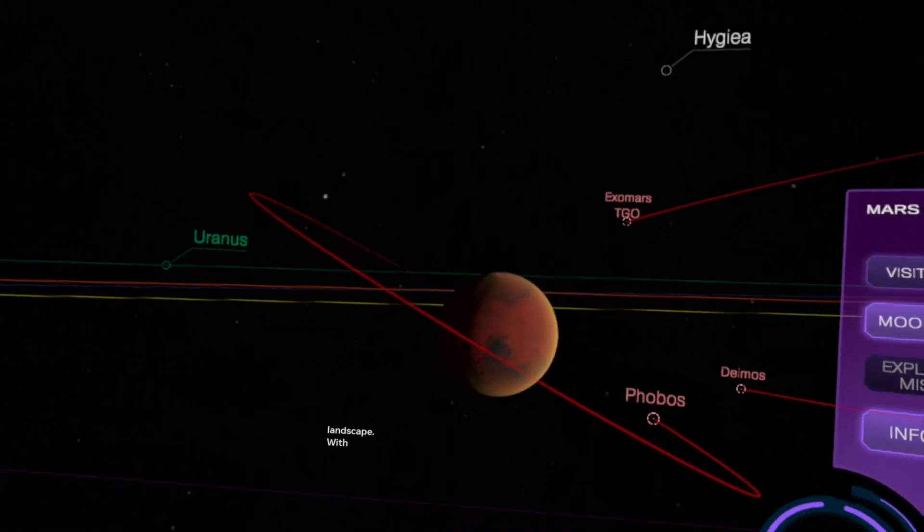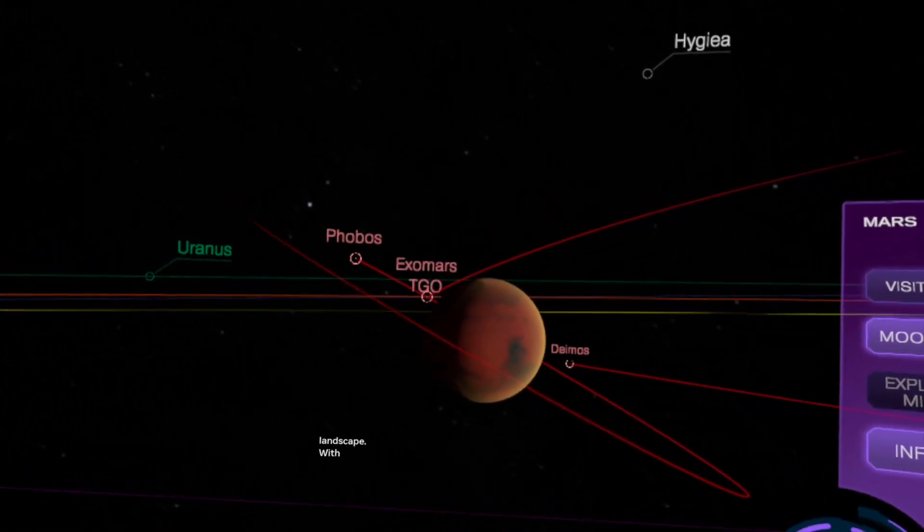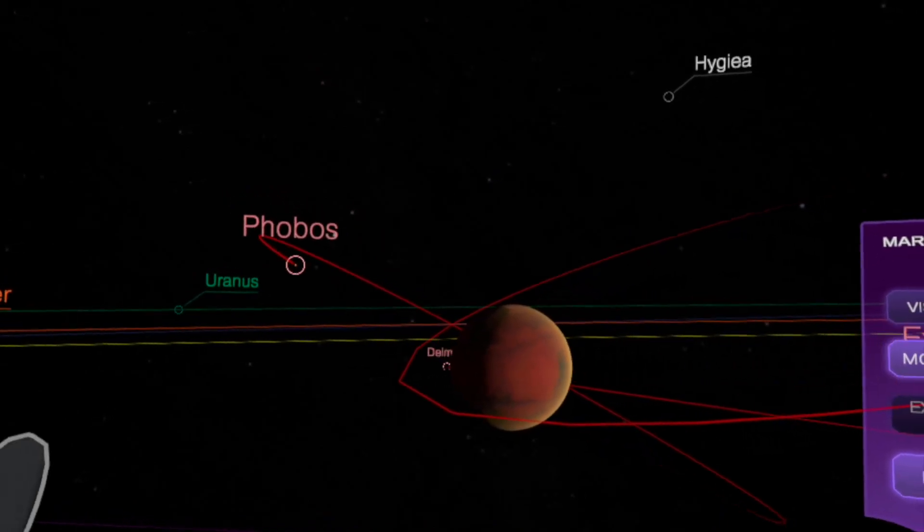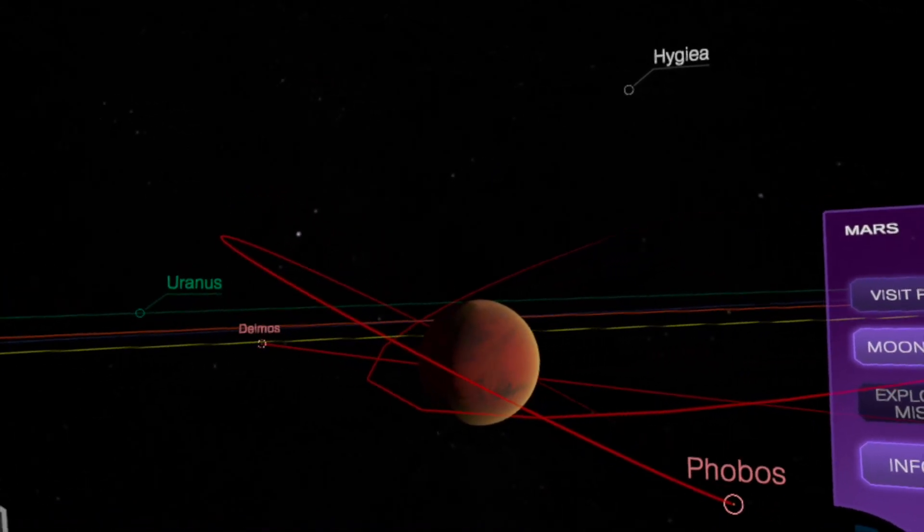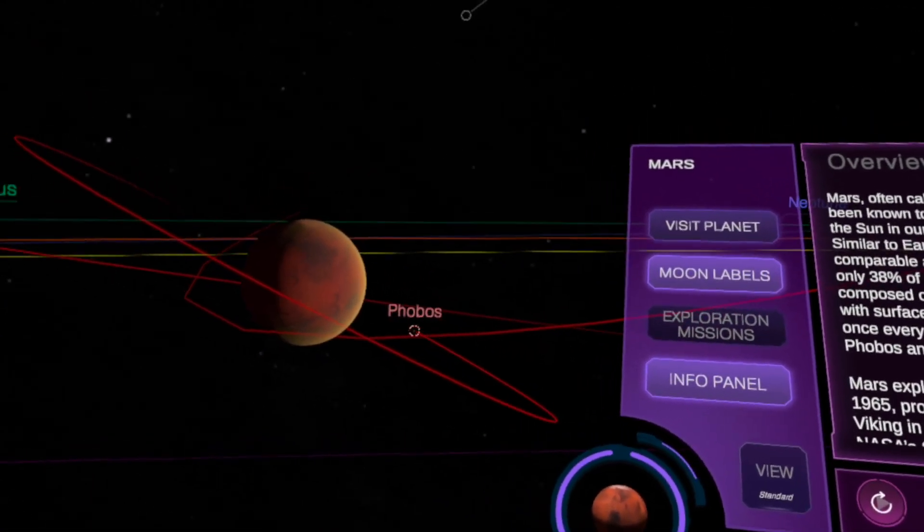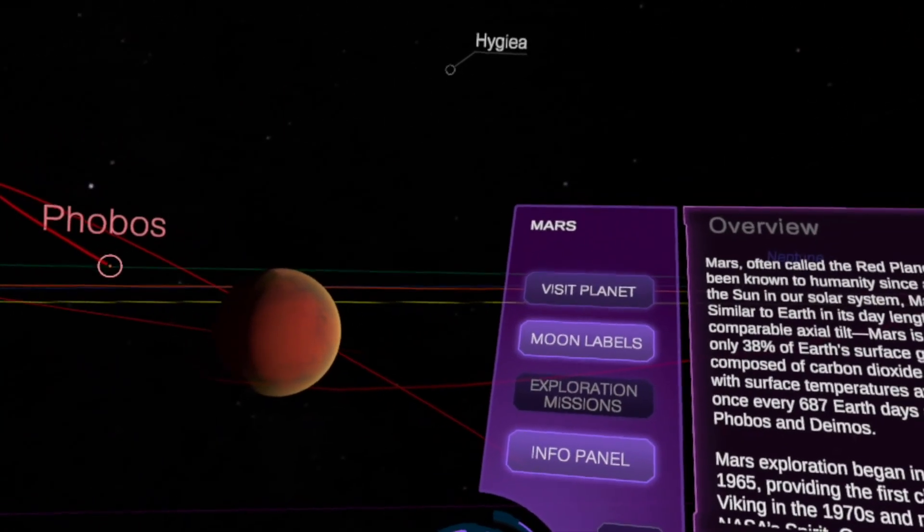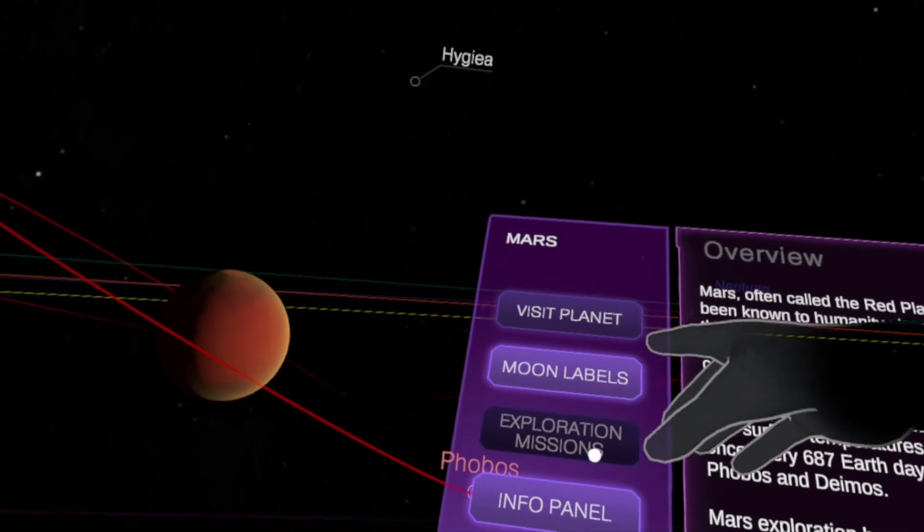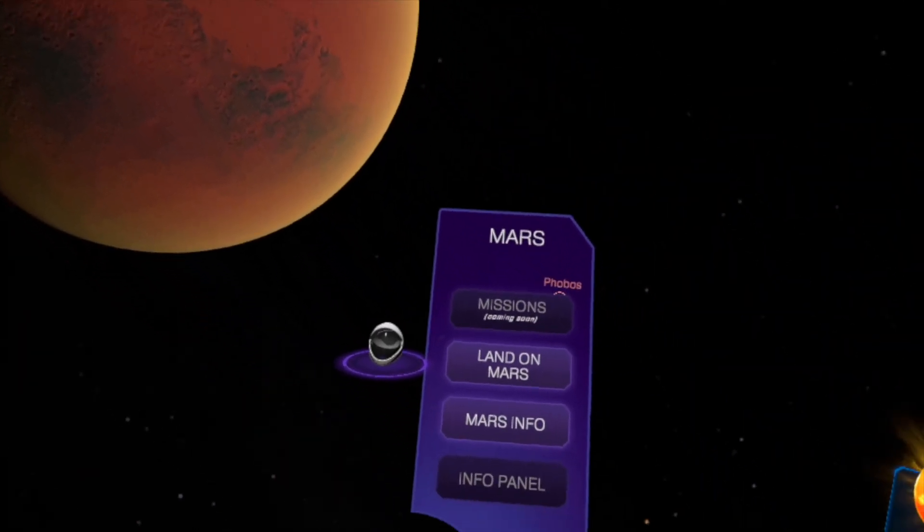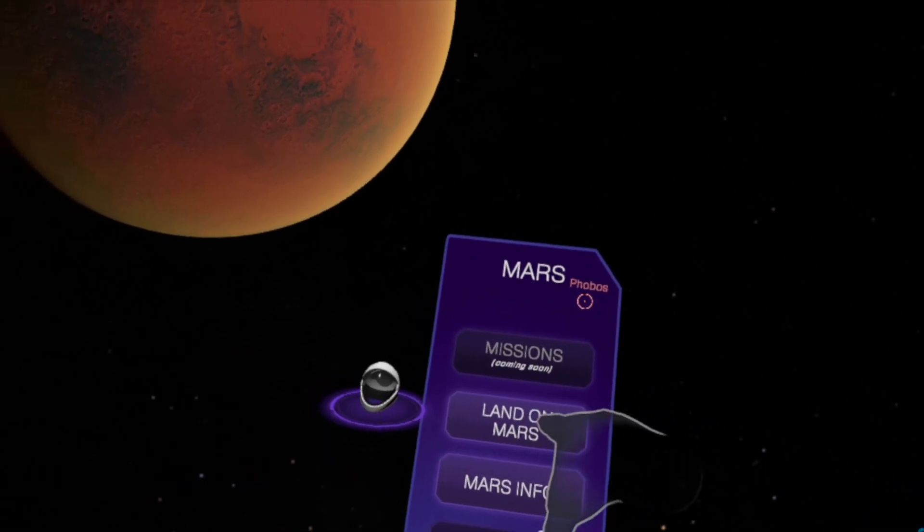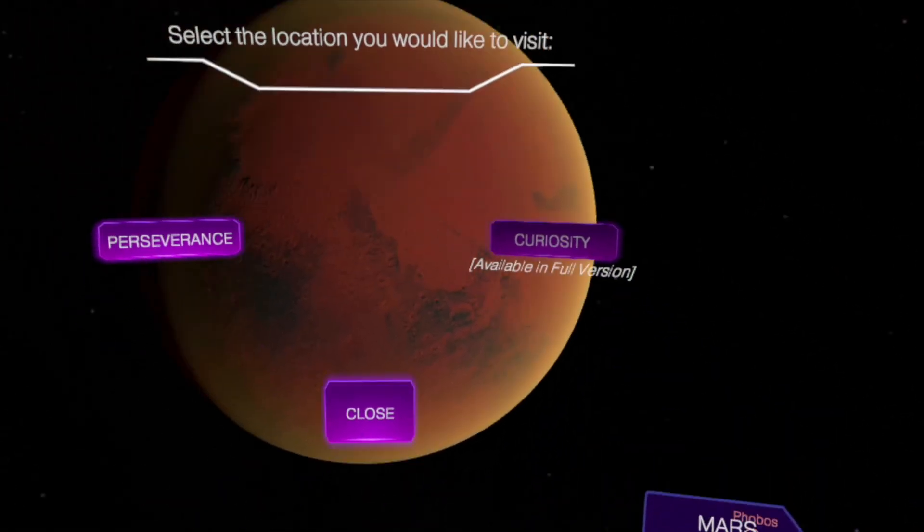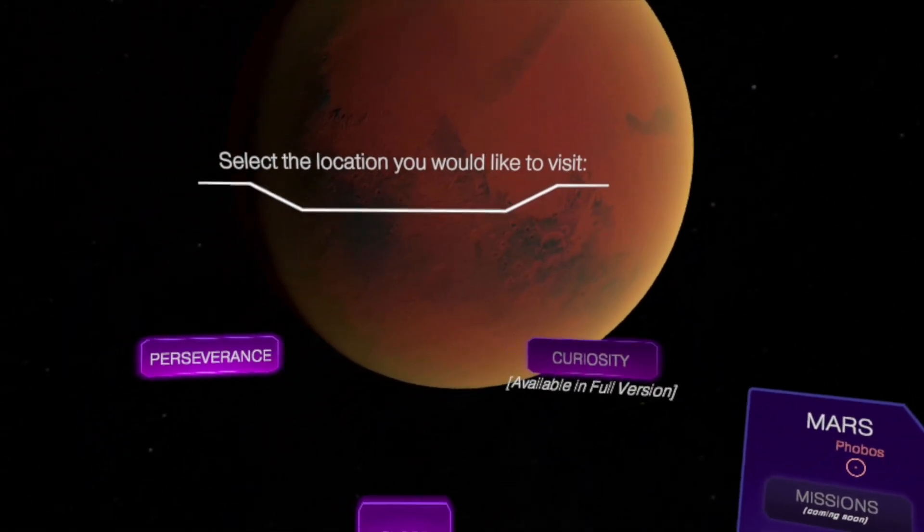So Elon Musk wants to colonize Mars. Not in 10 years, not in 20 years, not in 30 years, let's say 300 or make it 500 years, because we don't have the technology. The Moon labels. Let's visit the planet. Oh, this is something new. Visit the planet. Missions, land on Mars. Let's go. Oh yes, I have a helmet on. Select the location you want to go. So let's go to Curiosity, Perseverance. Loading.